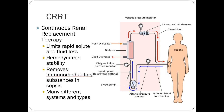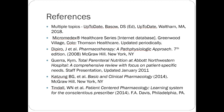CRRT — continuous renal replacement therapy — is essentially continuous dialysis for ICU patients. It's used in severe cases such as streptococcal pneumonia with heavy toxin production, or serious overdoses where something is being continuously manufactured or enterohepatic cycling. It's an option when you need to continuously remove something from the bloodstream that standard intermittent dialysis can't keep up with.